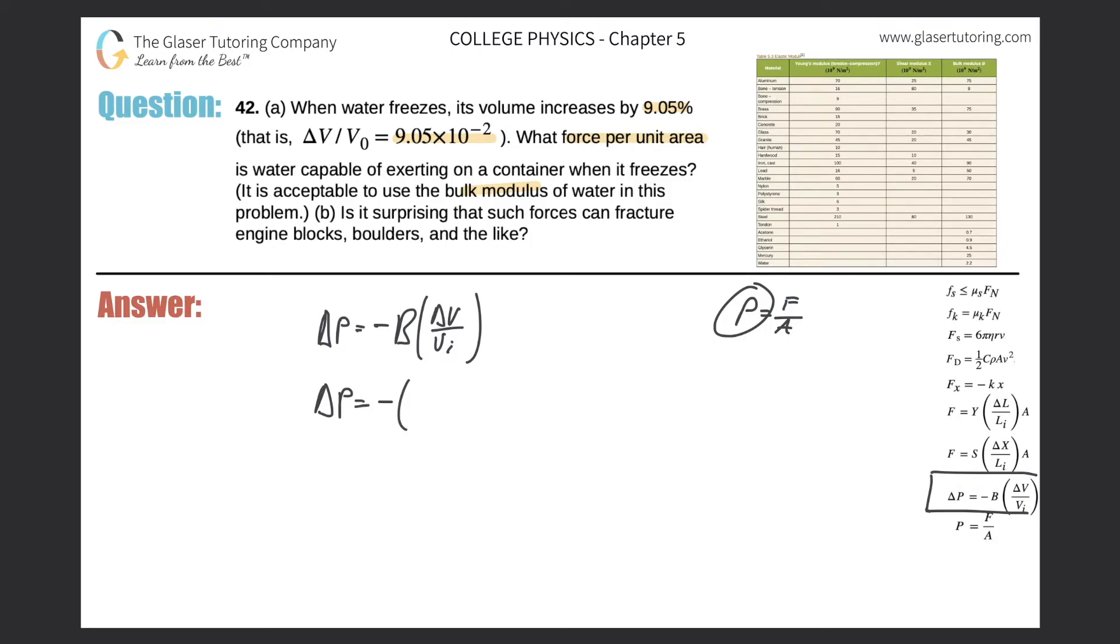We have to go to our table, find the bulk modulus of water. Here's water. Here's the bulk modulus. 2.2 times 10 to the 9. Just remember all these values come with 10 to the 9 at the top. So that's going to be multiplied now by my percent change, which it worked out to be 9.05 times 10 to the minus 2. So all I got to do is calculate now.